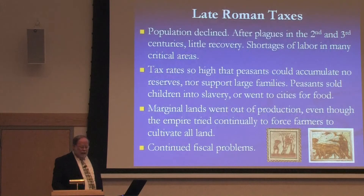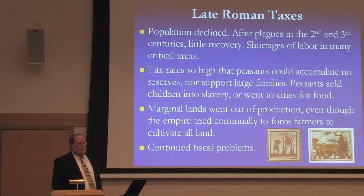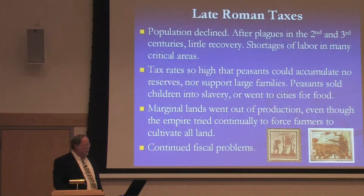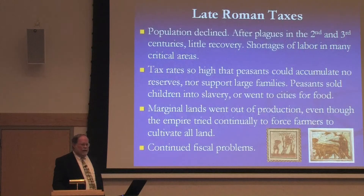The tax rates were so high that peasants were not able to accumulate reserves or support large families, and this is why population did not recover. One reads horrifying accounts of peasants actually selling their own children into slavery because they couldn't feed them, or going to the cities to look for food because they had nothing left on their farms. With these sorts of problems, marginal lands went out of production — they simply couldn't yield enough for taxes and a surplus, even though the government continually tried to force farmers to cultivate all of the land. And then, of course, there were continued fiscal problems.